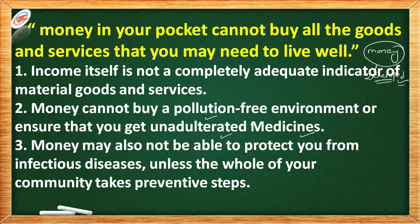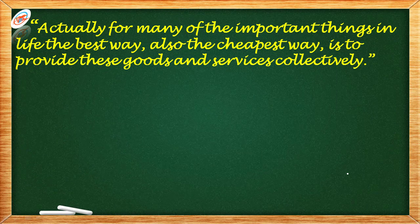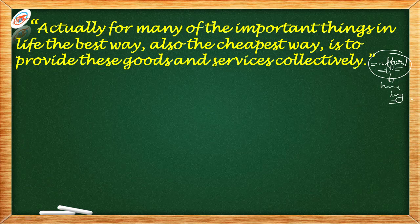Money may also not be able to protect you from infectious diseases unless the whole of your community takes preventive steps. Until your entire society takes steps, you cannot protect yourself from infectious diseases, whether you have money or not. So overall, money cannot give you everything. The next point is that for many important things in life, the best way — and also the cheapest way — is to provide these goods and services collectively. Things we cannot afford individually can be bought or hired collectively for a community.